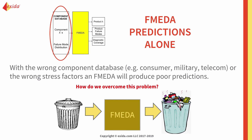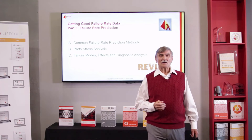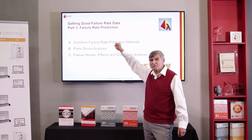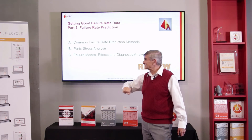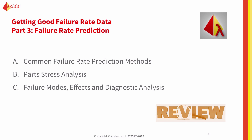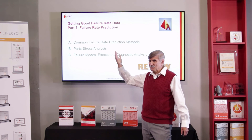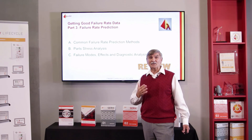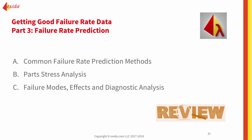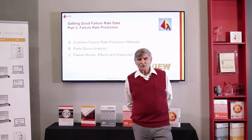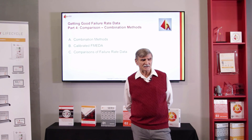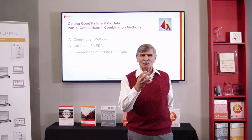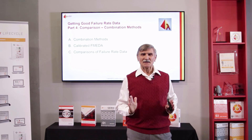How do we overcome the problem? We're going to talk about that in part four. So for part three, we talked about failure rate prediction methods — the three common types. Don't use B10. Parts stress analysis, the most common being MIL-217, seems to generate extremely pessimistic results, which kind of ruins all the benefits of optimization. And FMEDA — Failure Mode Effect and Diagnostic Analysis — suffers from the need for a good, accurate component database. Thank you very much for your attention in part three. Stay tuned for part four, where everything comes together. Thank you and goodbye.